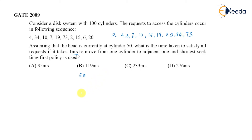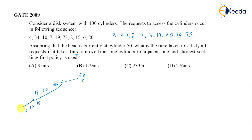Using shortest seek time first from position 50, we first go to 34 — the nearest request. Then we move to 20, then 19, then 15, then 10, then 7, then 6, then 4, then 2. Finally, only 73 is left, so we move directly to 73.